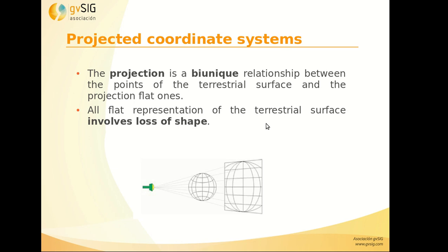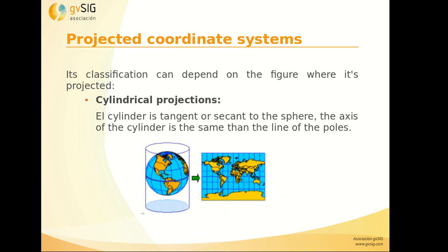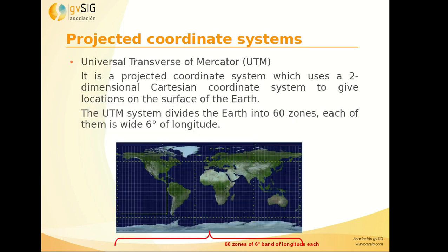The projection is a bi-unique relationship between the points of the terrestrial surface and the points of the projection plane. We can have different projections depending on the figure onto which it is projected — for example, a flat projection, a conical, or a cylindrical. The cylindrical projection is used for one of the most widely used reference systems in the world.